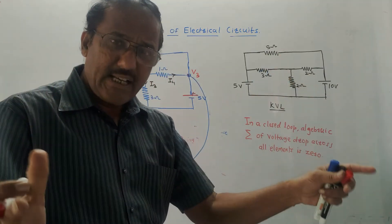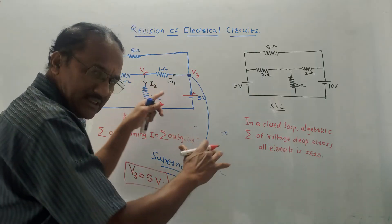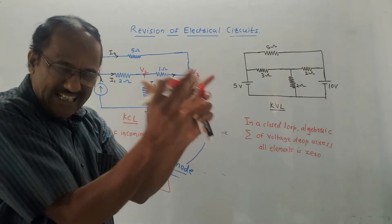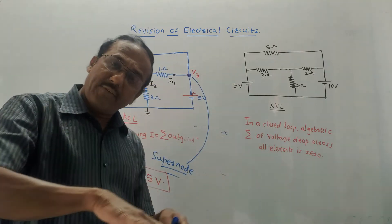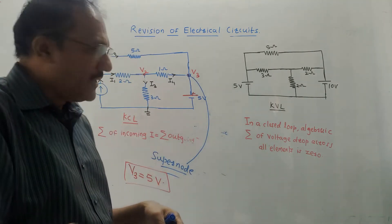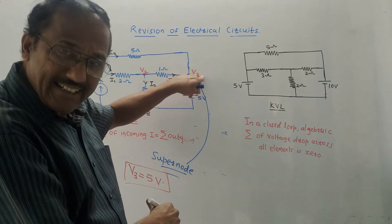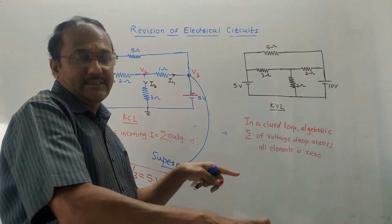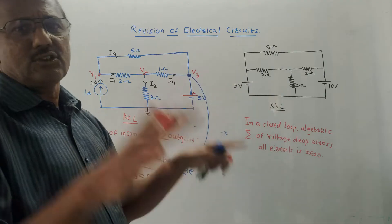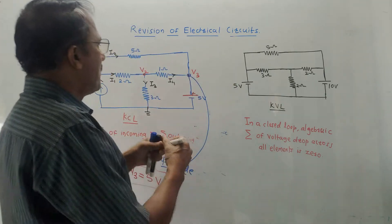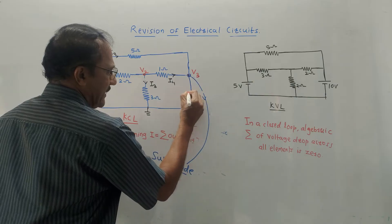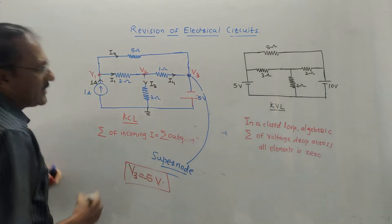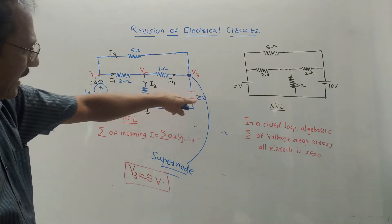To summarize for KCL: mark notations in terms of voltage (V1, V2, V3). For a super node — when a voltage source is directly connected at a node — do not apply KCL there. Instead, generate one equation directly from the voltage source value. If the polarity is reversed, write V3 equals minus 5V. Whatever polarity is given, apply that sign and write the value as it is.